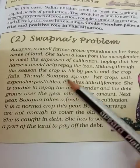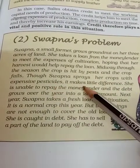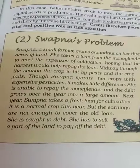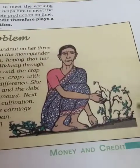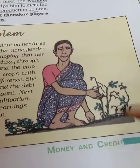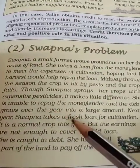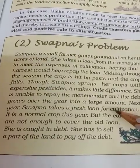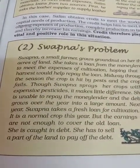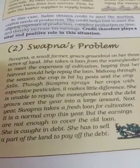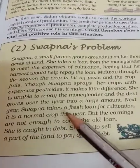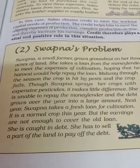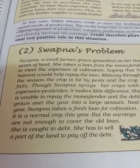Though Swapna sprayed her crops with expensive pesticide, it made little difference. She is unable to repay the moneylender and the debt grows over the years into a large amount. The following year, Swapna takes a fresh loan for cultivation. It is a normal crop, but the earnings are not enough to cover the old loan, and she is caught in debt. She has to sell a part of her land to pay off the debt.